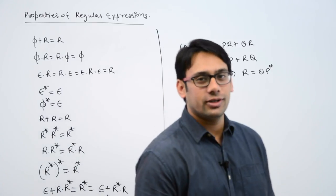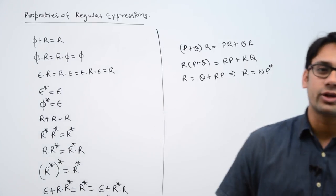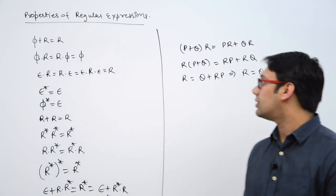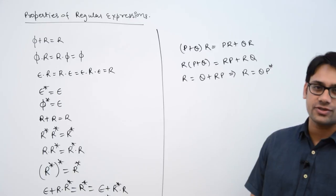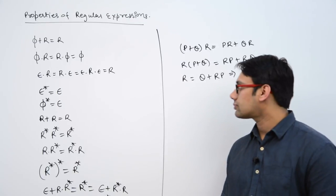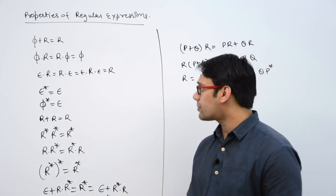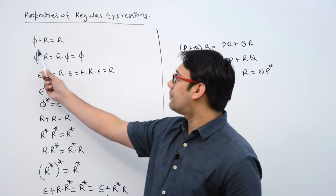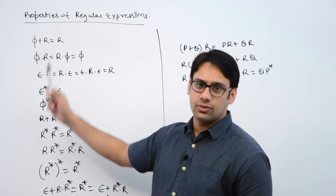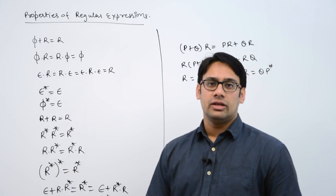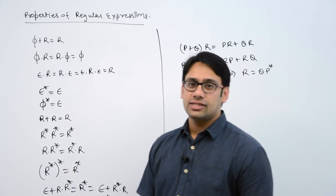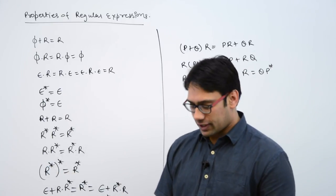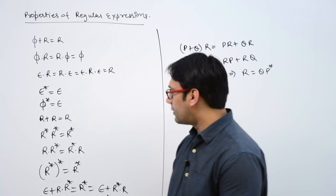Let us look at a few properties of regular expressions. The first property is phi plus r is equal to r, where r is representing a regular expression.